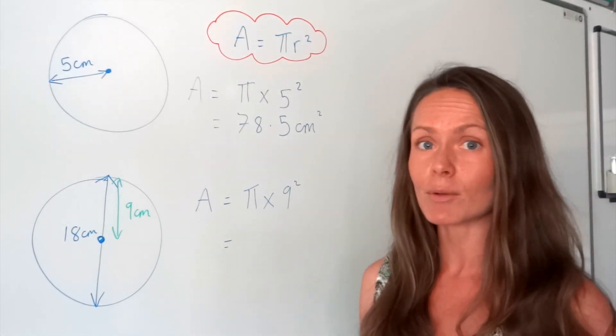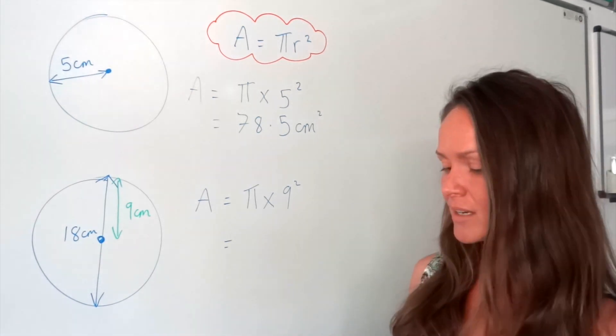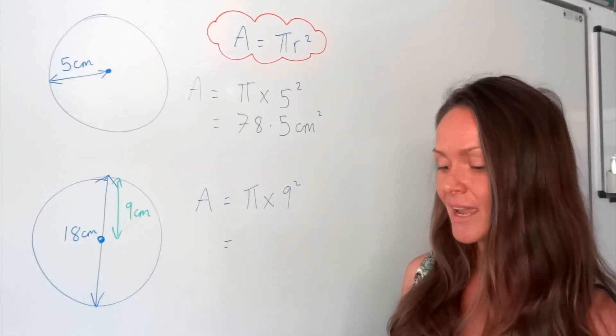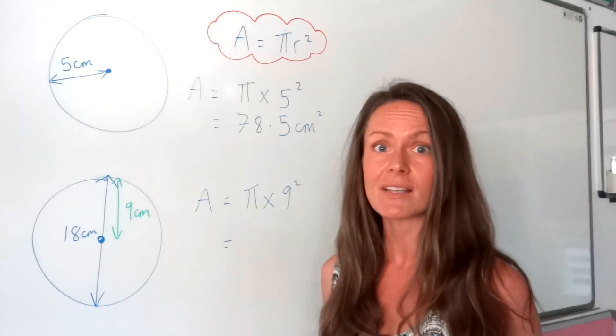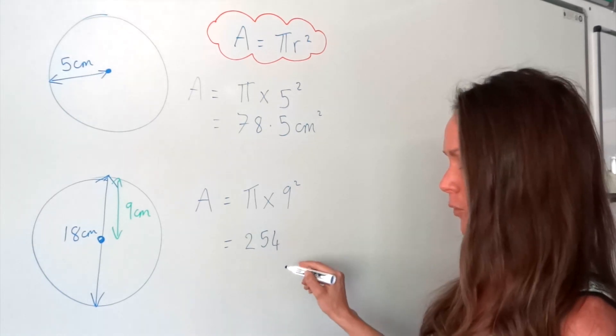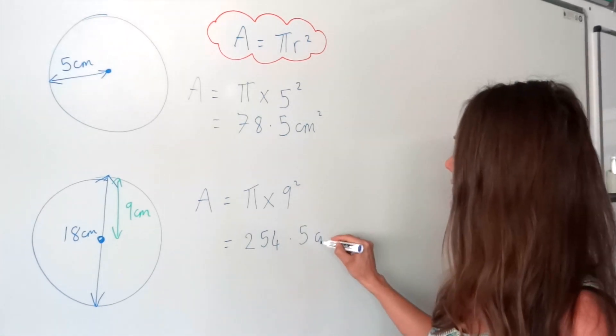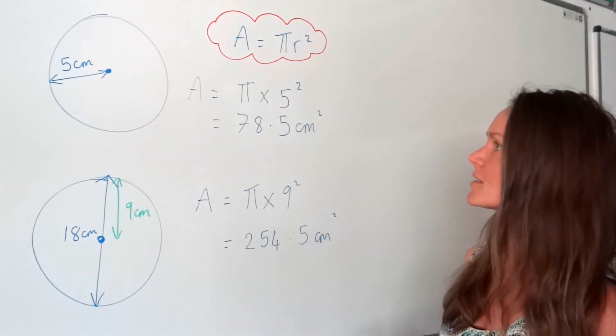So again, put this in your calculator. So press shift, then pi, multiply by 9 squared. And again, I'm going to round to one decimal place. So this one is 254.5. And remember the units for area, centimetres squared.